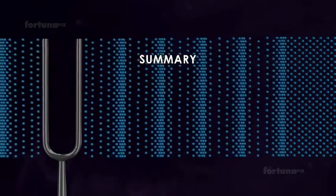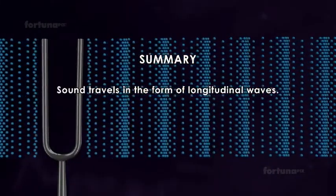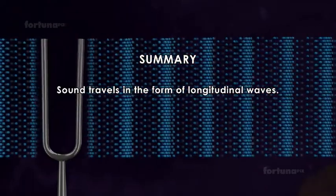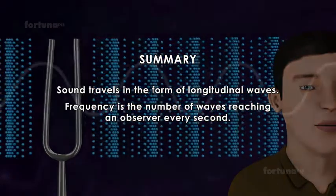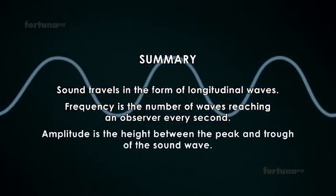Summary: Sound travels in the form of longitudinal waves. Frequency is the number of waves reaching an observer every second. Amplitude is the height between the peak and trough of the sound wave.